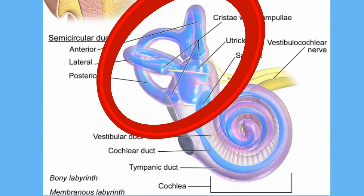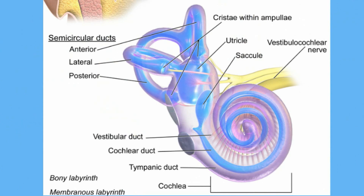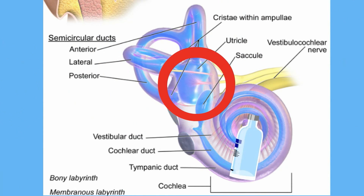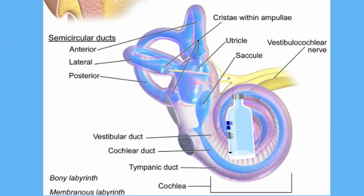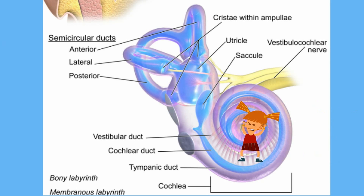These canals, as well as two little tiny sacs located behind them, are filled with fluid. They are also lined with tiny hair-like structures. When your head moves, the fluid in the semicircular canals is set in motion, and the moving fluid makes the cells' hair-like extensions bend.